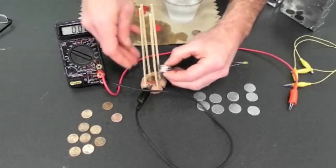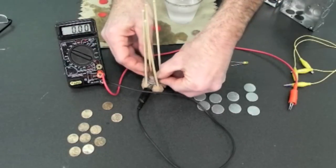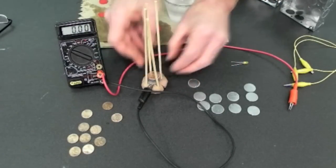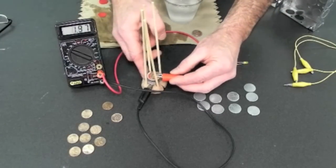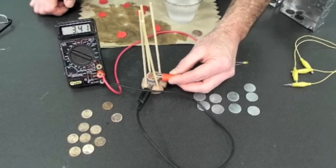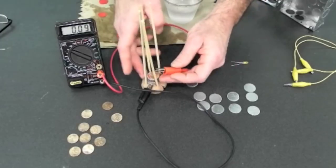Now I have 4 plus the one that's already there, I have a pile of 5 electrochemical cells, and I'm getting over 3 volts, 3.40 volts.